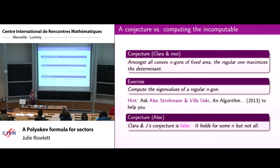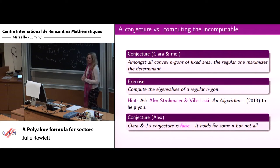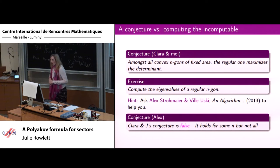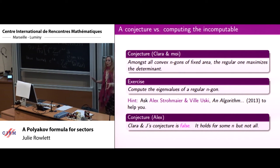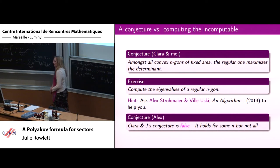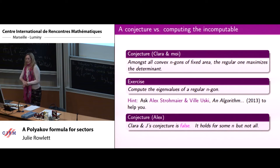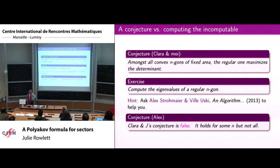Clara and I have a conjecture — you can blame it on me — that among all convex N-gons of fixed area, similar to the case for closed surfaces, the regular one uniquely maximizes the determinant. The second part of this exercise is a bit difficult, so you can ask Alex. Alex's conjecture is that our conjecture is false — in particular, it may hold for N equals 3, 4, maybe 5, but it appears to be false for N greater than or equal to 12.